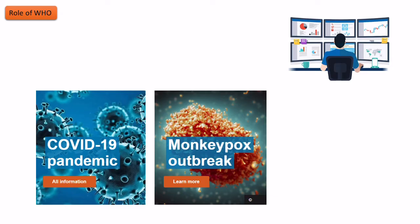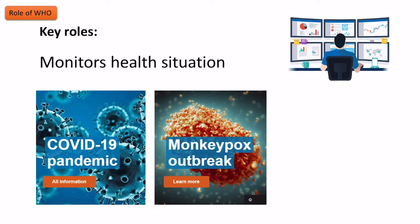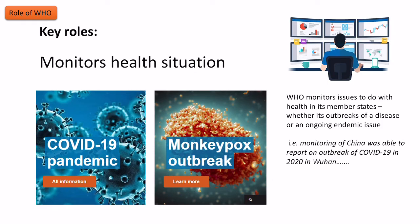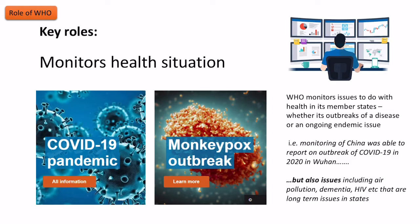Another key role is that WHO monitors the global health situation, partly through the data collection already discussed. They track what health issues are occurring in the world — for example, whether an outbreak of disease has happened in a country, or looking at ongoing endemic issues, meaning diseases that are constantly present. Examples include COVID and monkeypox, two diseases from the 2020s that they have been monitoring. They were also important in monitoring the situation when COVID emerged from Wuhan, China, in 2020, while constantly tracking long-term endemic issues like dementia and HIV.